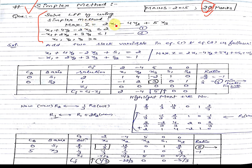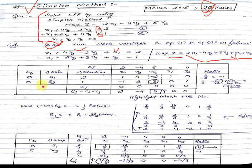Maximize Z = 2x1 - 4x2 + 5x3, and two constraint equations are given in less-than-or-equal-to form. Since they are inequality constraints, we add two slack variables s1 and s2. We put 0 coefficients for s1 and s2 in the objective function, so they will not make any change to Z.